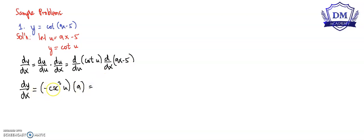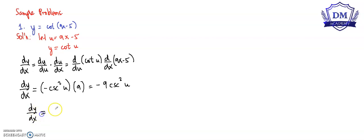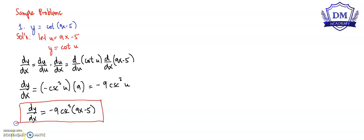So if we multiply this, negative cosecant squared u multiplied by 9, we have negative 9 cosecant squared u. So finally, the derivative of y with respect to x is equal to negative 9 cosecant squared of (9x minus 5). This is the derivative of the given function. Let's have another problem.